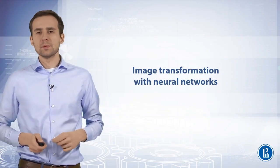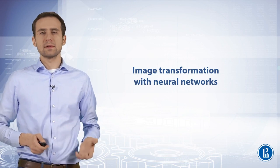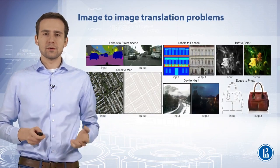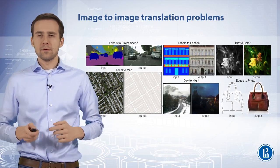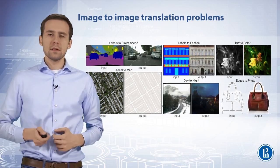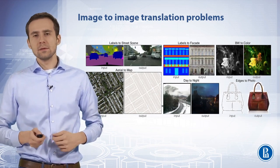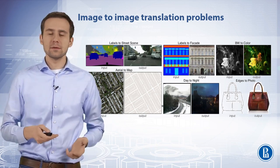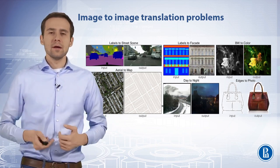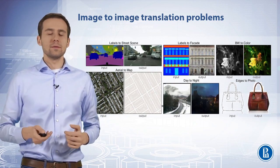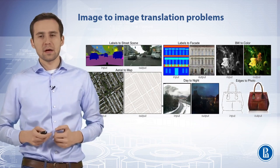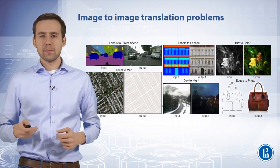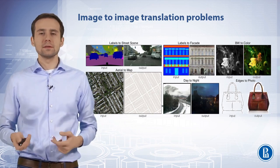Many problems in image processing, graphics and vision involve translating an input image into a corresponding output image. For instance, relate day to night, a sketch to a photo or a segmentation mask to a photo. These problems are often treated with application-specific algorithms, even though the setting is always the same: map pixels to pixels.